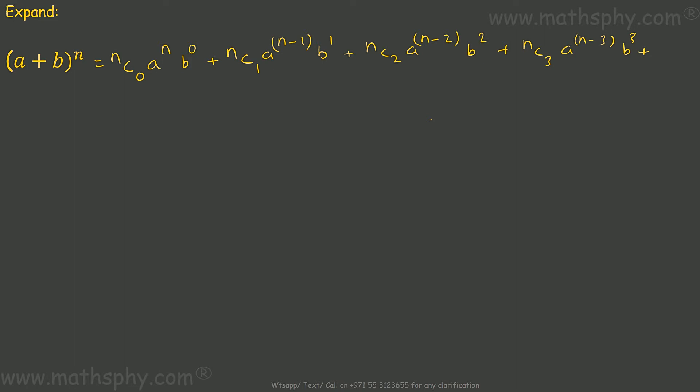Let's stop here for a minute and do a bit of brainstorming here. Here, my r is what? 0. This is n c r. n is this here, and r is 0. Here, r is 1. Here, r is 2. And here, r is 3.